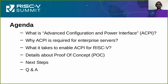Here's the agenda for the discussion today. First, we'll try to understand what is Advanced Configuration and Power Interface, popularly known as ACPI. I will give you a 10,000-foot view of ACPI because ACPI is a fairly complicated specification with more than 1,000 pages of documentation, and I'll try to give some details for people who are new to ACPI before we jump into the RISC-V specific things. Then we will understand why ACPI is such an important feature for enterprise class servers. After that, we will understand what it takes to enable ACPI for RISC-V and what updates we need in the ACPI specification. I have done some prototype of Linux kernel booting on QEMU RISC-V platform with ACPI support.